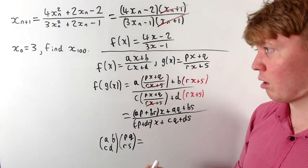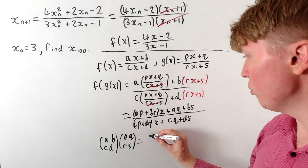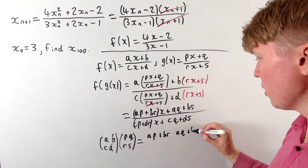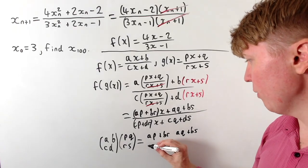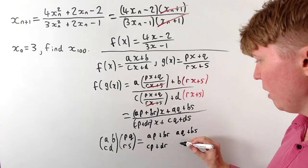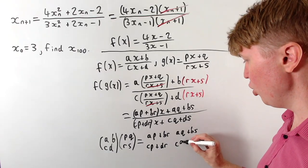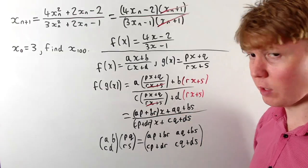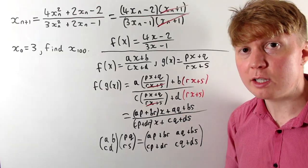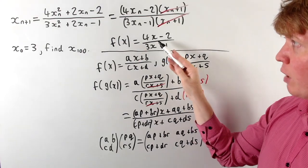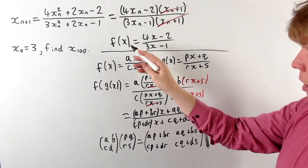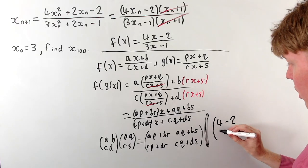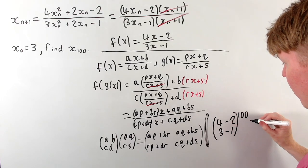If we multiply the two matrices corresponding to f and g, we get exactly ap + br in the top left, aq + bs in the top right, cp + dr in the bottom left, and cq + ds in the bottom right — matching our composition. So if we want to apply our function f 100 times, the problem amounts to computing the corresponding matrix raised to the power of 100.